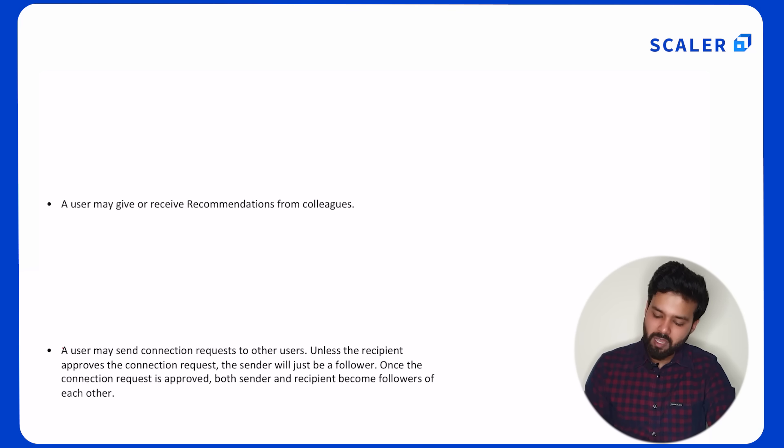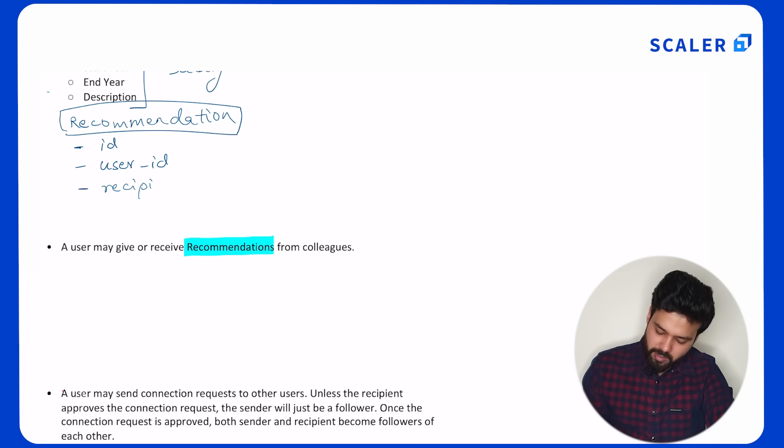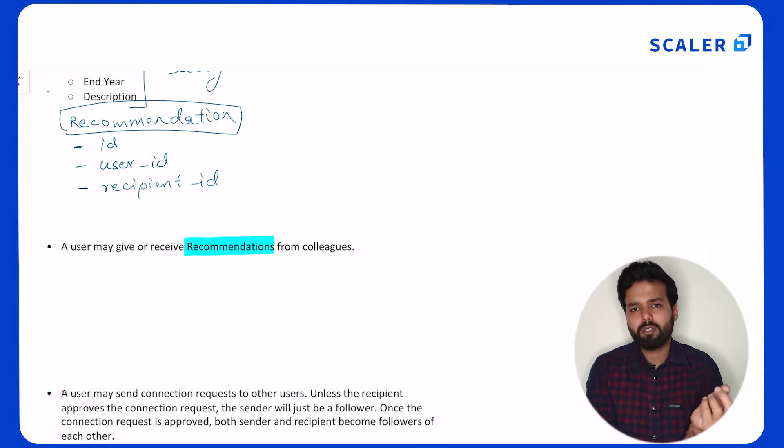The next requirement is to have recommendations. Now a particular user can either give recommendations or receive recommendations. Since this is a list, it doesn't make sense to add this in the attributes of your particular user. It makes sense to have a separate entity. So let's go ahead and create a recommendation entity. We'll have an ID, the person who is given the recommendation—so let's say user ID for that—and it will also have a recipient ID. Do I need to create a mapping table in this case? Now a particular recommendation will have just one user ID and it will also have one recipient. That information is actually captured in this particular table. So we don't need a mapping table in case of a recommendation. If I want to find out all the recommendations that I have, I'll go to the recommendation table and select star from recommendations where recipient ID equals my user ID.